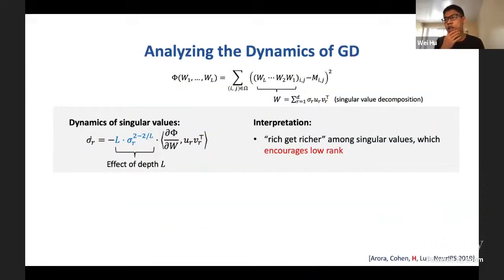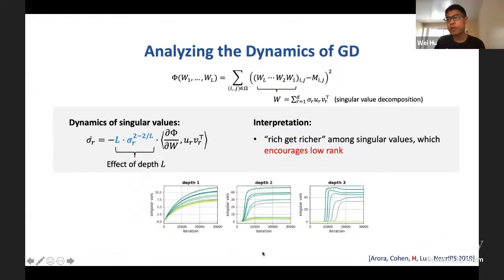And this implicit regression effect, we can understand it by analyzing the dynamics of the gradient descent algorithm in this problem. An important step in the analysis is to derive the dynamics of the singular values of the solution matrix, which is this equation. From this equation, we can see that the depth, the number of layers L, affects this dynamics via this blue factor. And we can interpret it as inducing a rich-get-richer phenomenon among different singular values, which encourages low rank, because different singular values will grow at very different rates according to this equation. We can verify this intuition by plotting the evolution of all the singular values during the course of gradient descent.